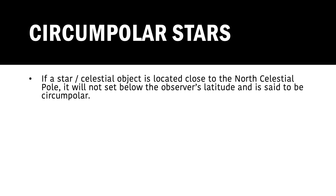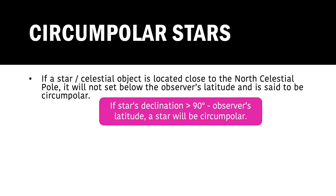Circumpolar stars: if a star or celestial object is located close to the northern celestial pole, it will not set below the observer's horizon, and it is said to be circumpolar. It's important to note that these stars are unable to be seen during the day; however, they are always present. The only reason they cannot be seen during the day is because the sun's brightness outshines them. The formula to determine whether a star will be circumpolar at a particular latitude is: if a star's declination is greater than 90 degrees minus the observer's latitude, the star will be circumpolar.